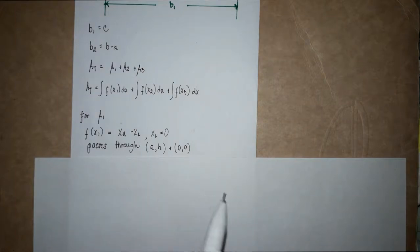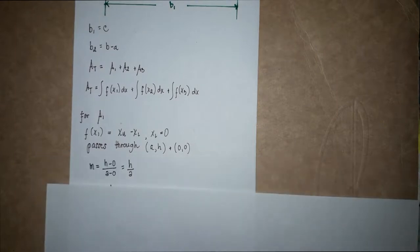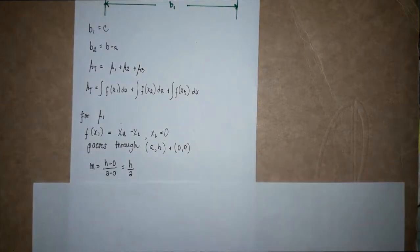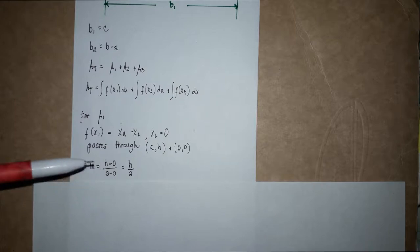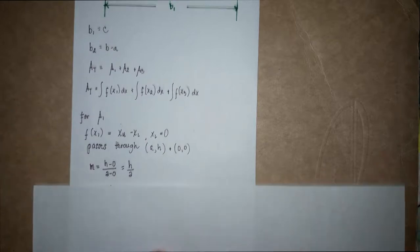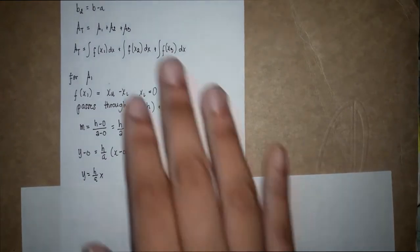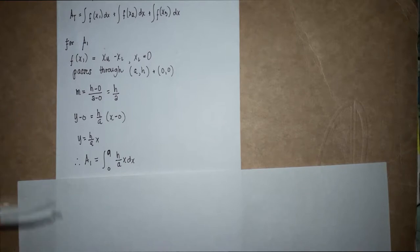The line passes through (a, h) and (0, 0), so the slope is equal to h minus zero over a minus zero, which is equal to h over a. Therefore y is equal to h over a times x, and A1 is equal to the integral of (h/a)x dx integrated from zero to a.